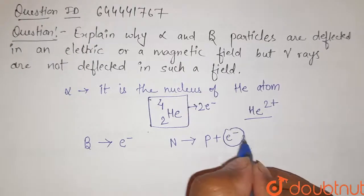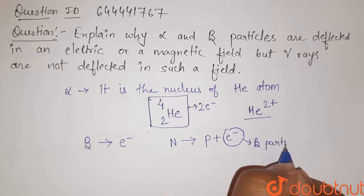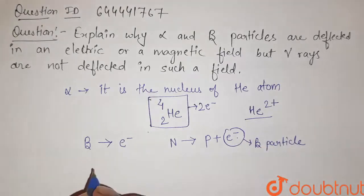So this electron is known as the beta particle. This is an electron, so this also has some charge.